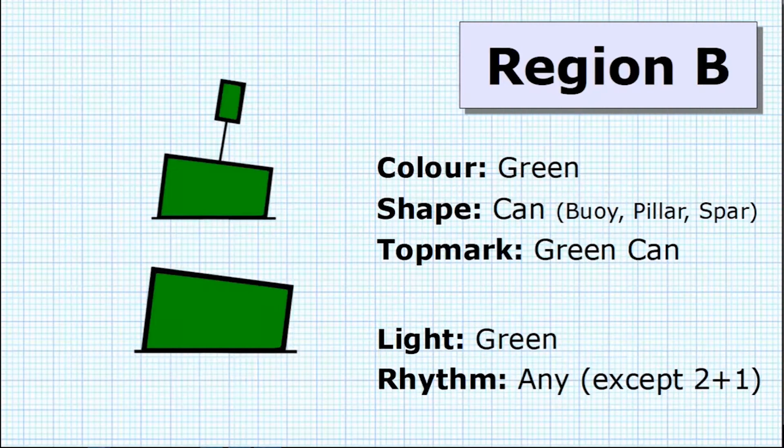Swapping over to Region B, we can see that the only thing that has changed is the color. The color of the main buoy is swapped to green, the color of the top mark again has swapped to green, and the color of the light has swapped to green. Everything else remains exactly the same.